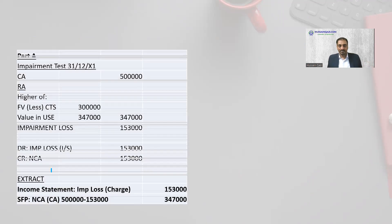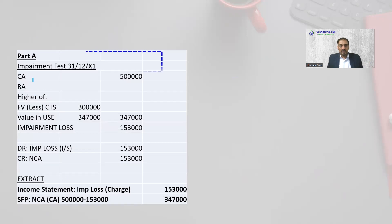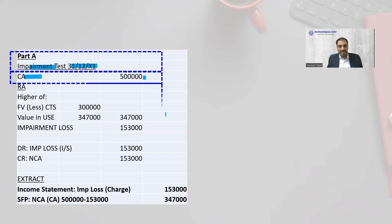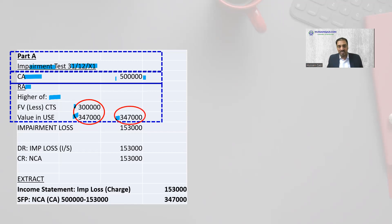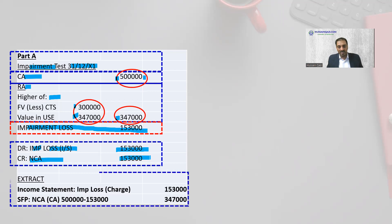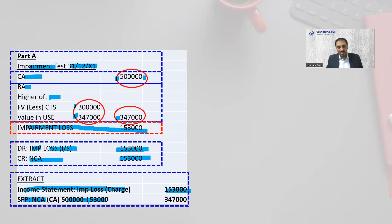Part A — FR approach. Impairment at 31st December X1: carrying amount 500,000, compared with recoverable amount, which is the higher of fair value less cost to sell or value in use. The higher figure is 347,000. So we have identified an impairment loss of 153,000. Ignoring part B with no revaluation, the impairment loss is charged to the income statement. Extract of income statement: impairment loss charged 153,000. Statement of financial position: 500,000 minus 153,000 equals 347,000. This is what you have done in F7.